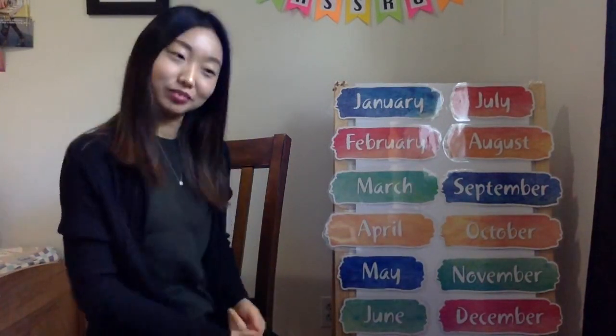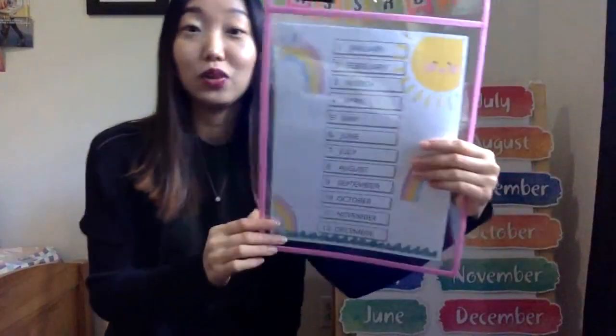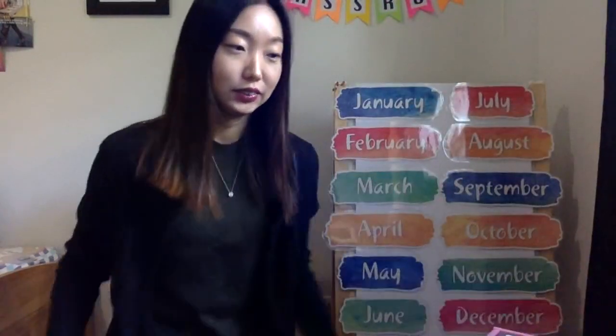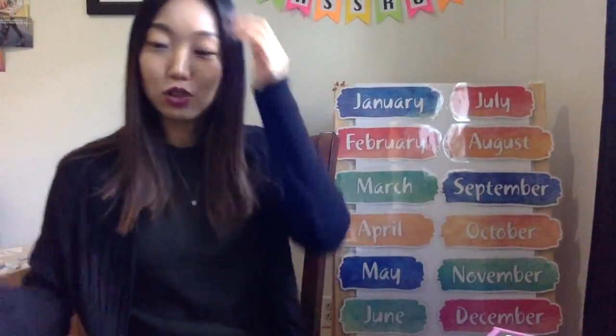Good job! Let's move to the handout — put out your 12 months in a year handout, and we're gonna find the month we are in now. What month are we in? We are in the same month as last week. Last week we were in September, and this week we are still in September. Let me check my computer — it's September 30 today.